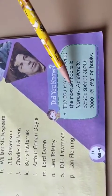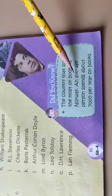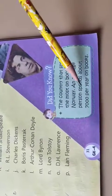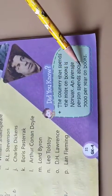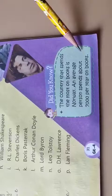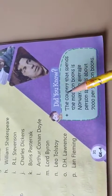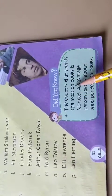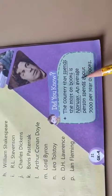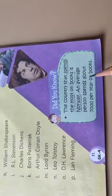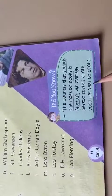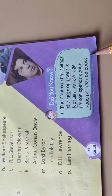The country that spends the most on books is Norway. An average person spends about 7,000 per year on books.